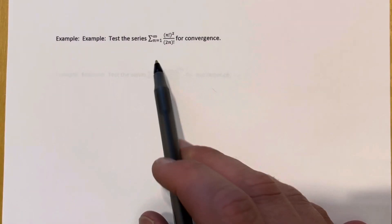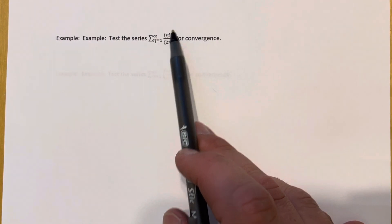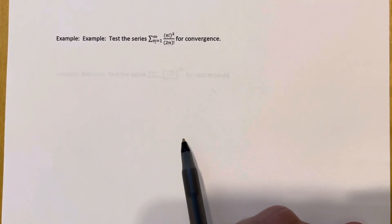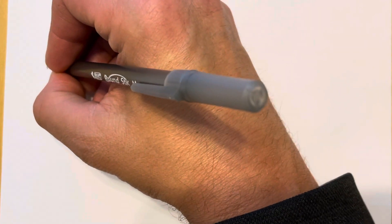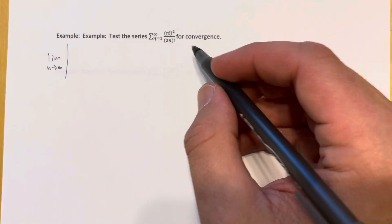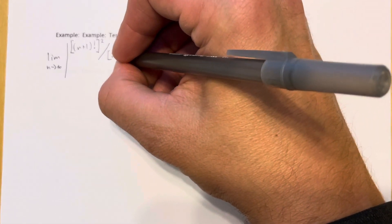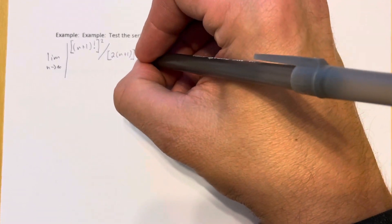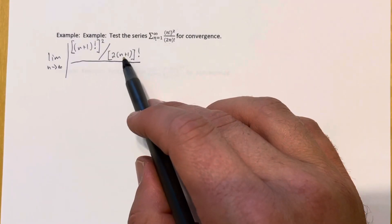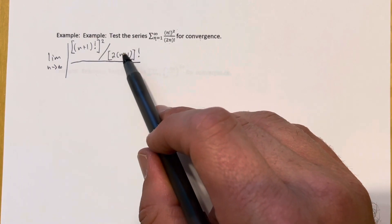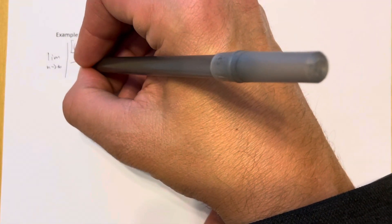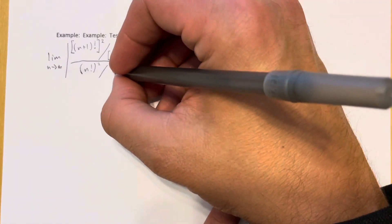Let's test the series from n=1 to infinity of (n!)² / (2n)! for convergence using the ratio test. Taking the limit as n → ∞, I replace n with n+1: the (n+1)th term is (n+1)!² / (2(n+1))!. Be careful — it's 2(n+1) in parentheses, not 2n+1. The nth term is (n!)² / (2n)!.